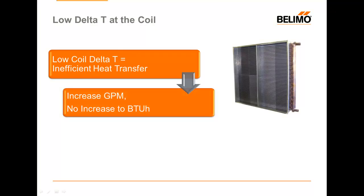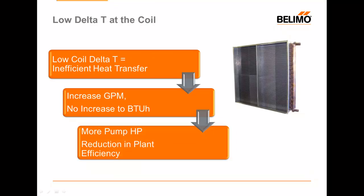Low coil delta T means that I have inefficient heat transfer — I sent very cold water to my coil and it's still pretty cold when it heads back to my chiller plant. This is typically caused by increased GPMs. I'm flowing more water to my coil but due to my low delta T I'm not generating an increase in the total number of BTUs produced, so I cannot offset any additional load in that space. I'm pumping more water and not creating any more BTUs, which means I have to use more pump horsepower and I'm reducing my overall plant efficiency.